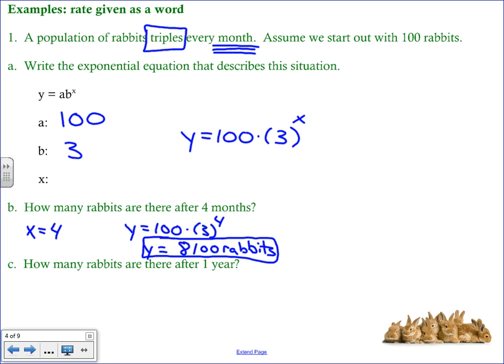Part c very similar question. How many rabbits are there after one year? We have to be a little bit careful here. After one year is a different unit of measurement than months. So you have to ask yourself how many tripling periods were there in a year? Well since the population triples every month there were 12 months in a year. So then x has to be 12 because there were 12 tripling periods.